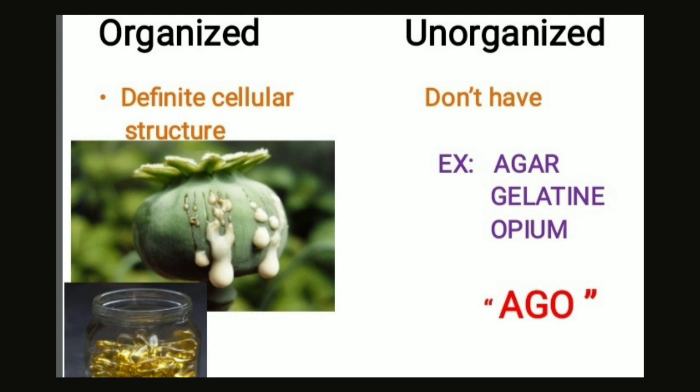There are three unorganized drugs in this lesson: agar, gelatine, and opium. You can easily remember them with the word AGR — A for agar, G for gelatine, and R for opium. All the other crude drugs are organized drugs.